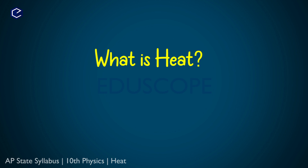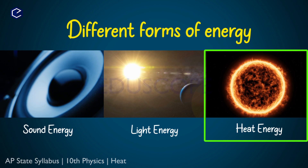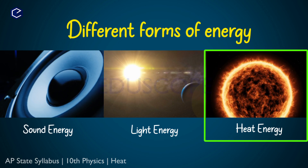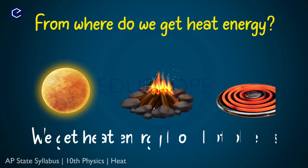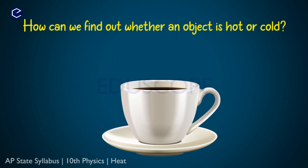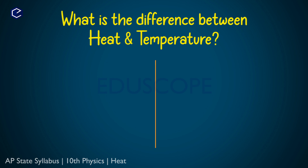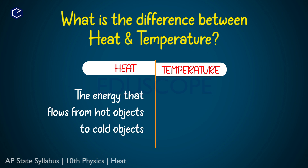What is heat? Heat is a form of energy, just like sound energy and light energy. In the same way, heat is also a form of energy. Heat energy is produced or released by hot objects.